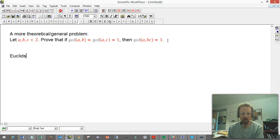So let me remind people what Euclid's Lemma says. It says that if D divides the product of two integers and it's relatively prime to one of them, then D has to divide the other.